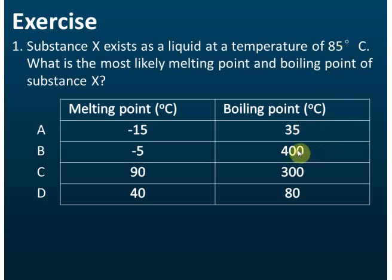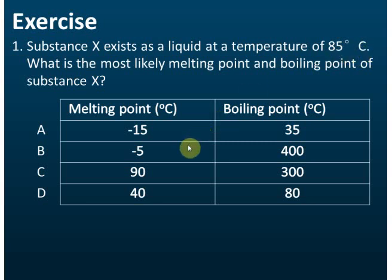So the answer is either B or C. The melting point or freezing point must also be lower than 85 degrees Celsius for the substance to be liquid. Negative five degrees is lower than 85, so that works. The other option is higher than 85, so it's eliminated. Therefore, the answer is B.